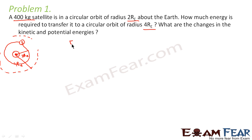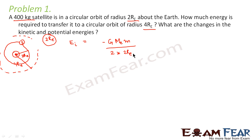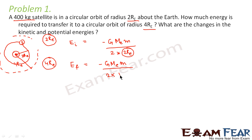In the initial case, the satellite is moving in a radius of 2RE, so the initial energy would be minus G·Me·m divided by 2×2RE, because the radius is 2RE. In the final scenario it is moving in an orbit of radius 4RE, so the final total energy would be minus G·Me·m divided by 2×4RE.